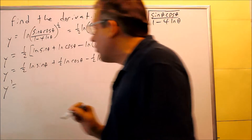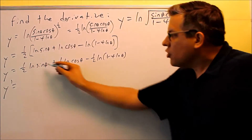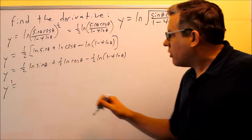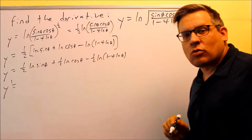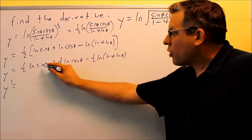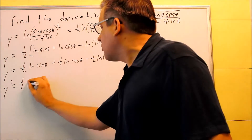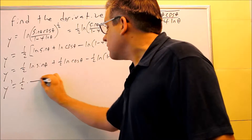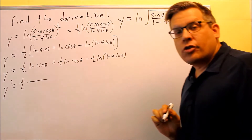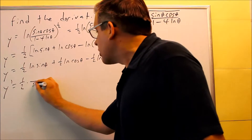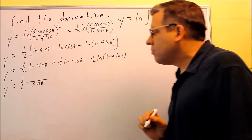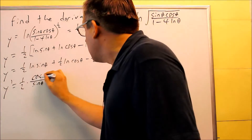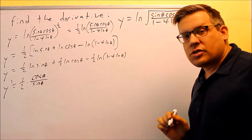To apply the derivative, we're going to use the u'/u formula on each one of these, because every one of them has something inside that's not just a regular theta. The 1/2 comes down, and then we multiply by u'/u. The u is sine theta, so that goes on the bottom, and the derivative of sine is cosine — that's u prime and it goes on top.